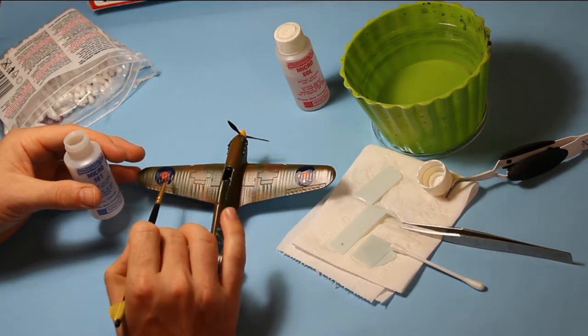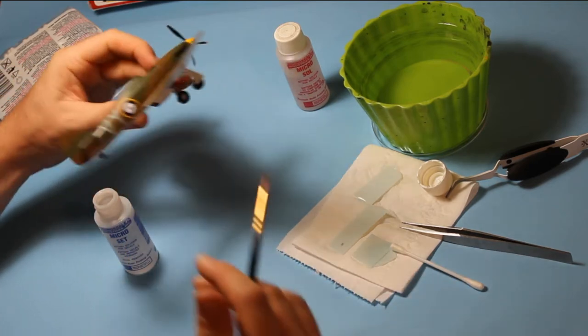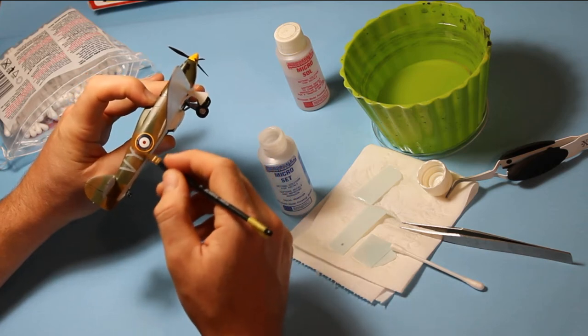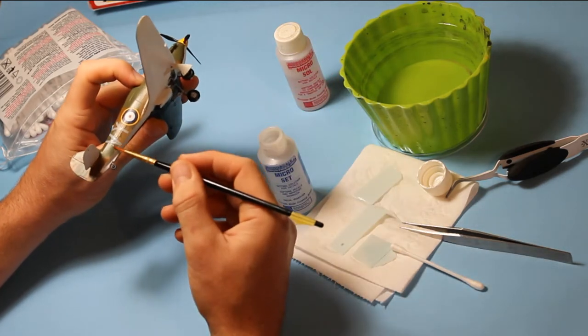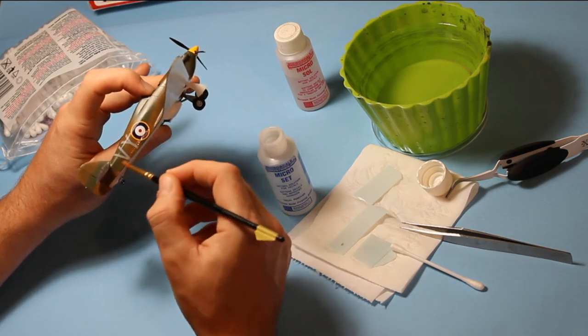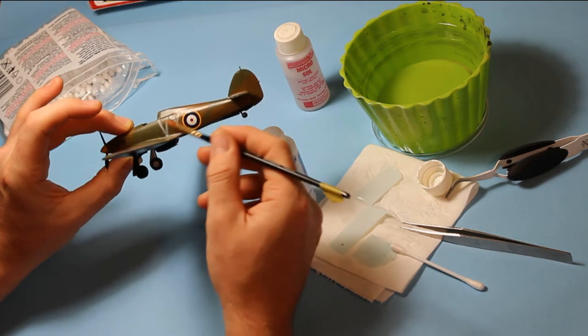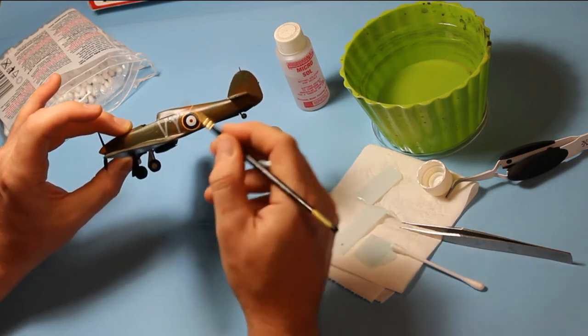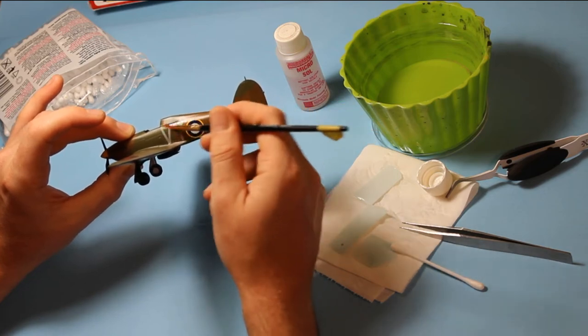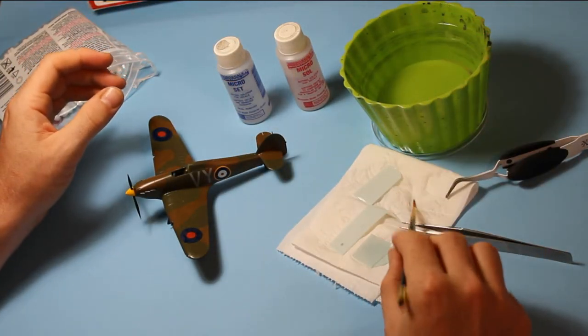Then you can come on with micro-sole afterwards to try and get the decal to go down further if you need it to adhere more. This micro-set helps it actually stick to the model. You don't want too much. This can eat into the paint as well so you don't want to put tons on. Just a little bit like that, just to get the process going. As you can see we've got a few wrinkles in all of that carrier film. It can initially make the decal shrivel up, but don't be alarmed.